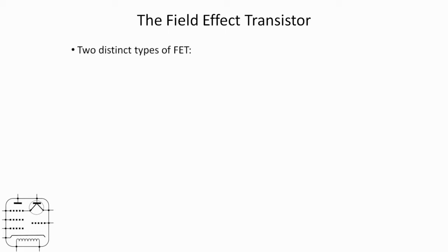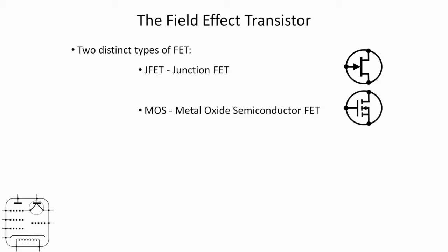The field effect transistor comes in two distinct types. The first type is the JFET or Junction FET, which has a symbol that looks a little like that - that's the symbol for the N-channel version. The direction of the arrow decides if it's N-channel or P-channel. The MOS or Metal Oxide Semiconductor FET has symbols like these. Again, the arrow dictates whether it's N-channel or P-channel, and those two symbols describe either the enhancement mode or depletion mode of MOSFET.